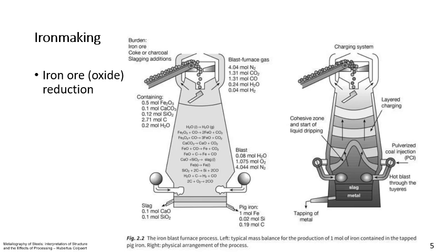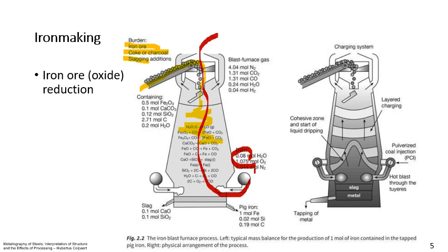Iron making starts with a blast furnace, where iron ore, coke, and slag materials are added through the top as solid materials, and they are heated as the hot gases from the hot blast work in the opposite direction. Blast furnaces have been used for a long time. The various layers of the burden work their way down and the hot blast works its way up, producing two materials: the iron metal that we want, and the slag.